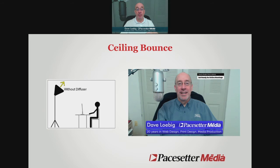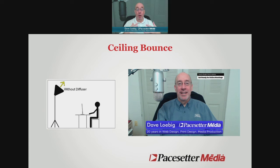Another choice is bouncing the light off the ceiling in front of you. In fact, that's what I have right now — two big lights in front of me. The example in this picture is one light bouncing off the wall: a pretty good, big broad light source that just lights somebody well. This is especially flattering for older people, as it tends to hide wrinkles and shadows.